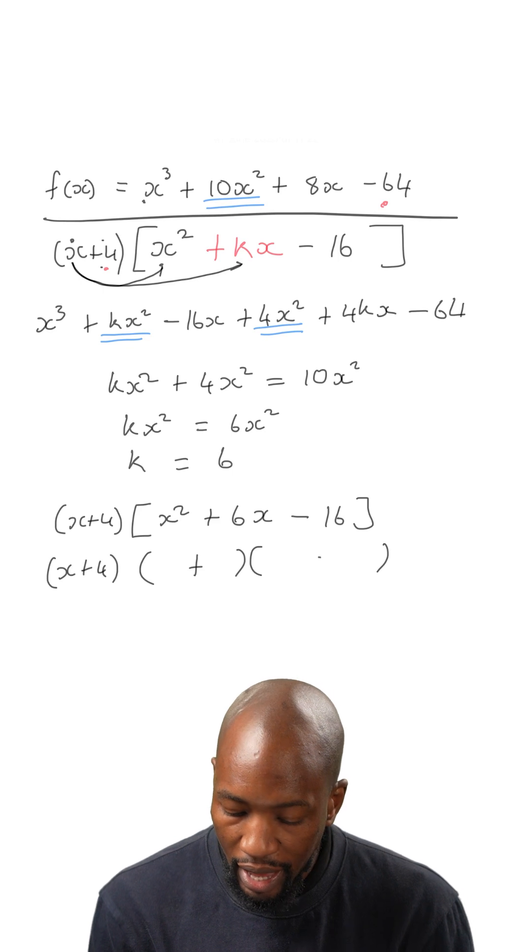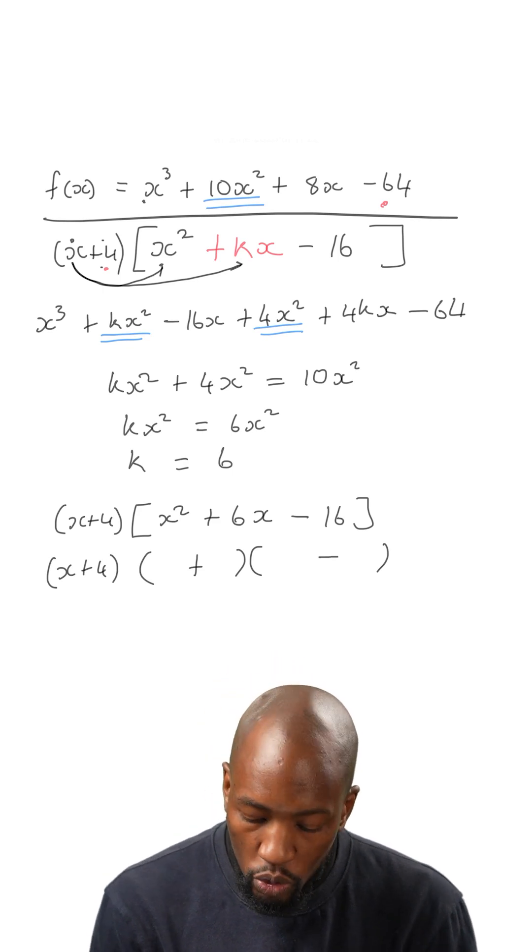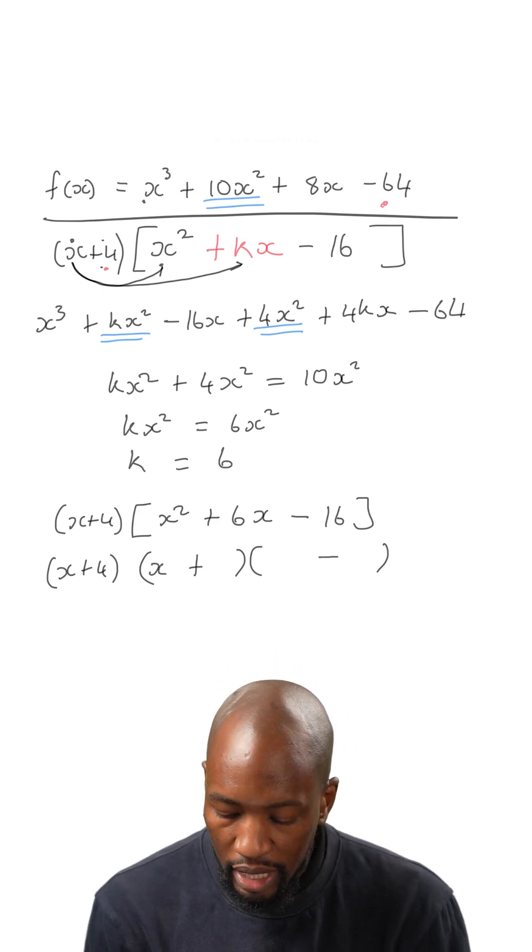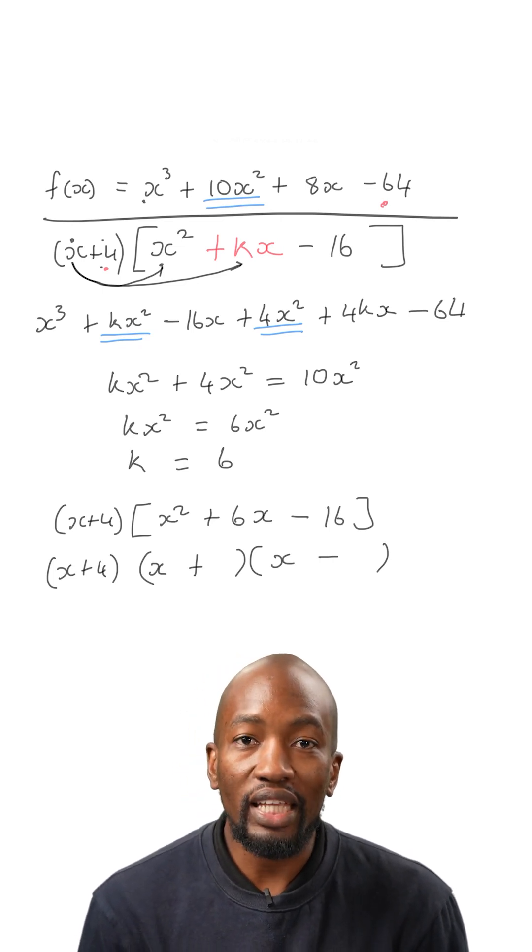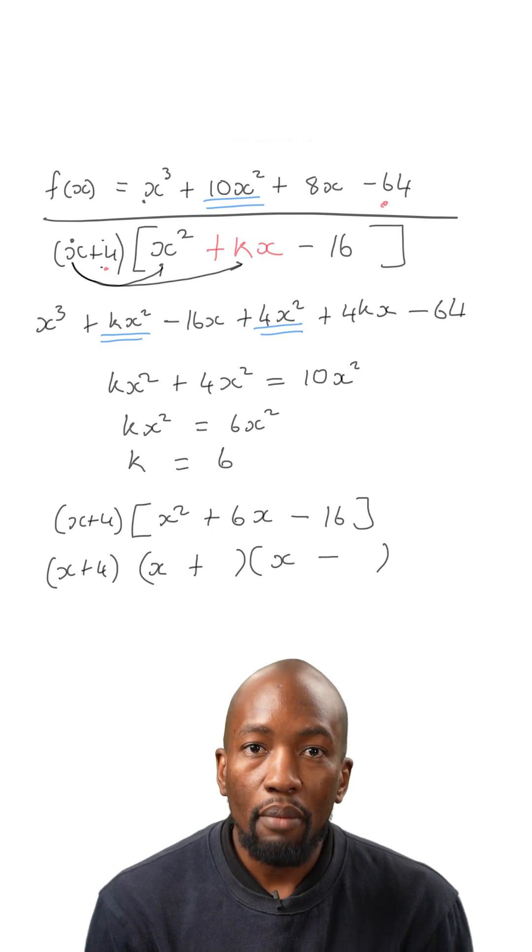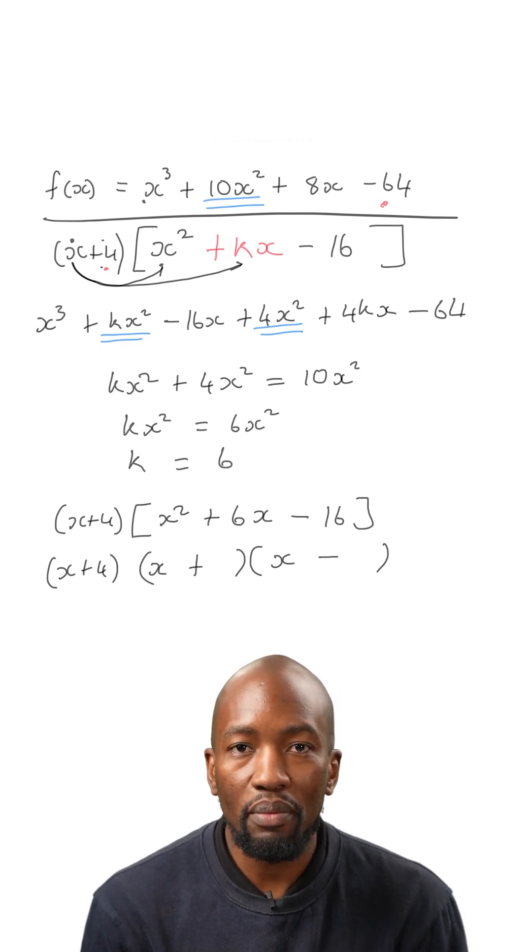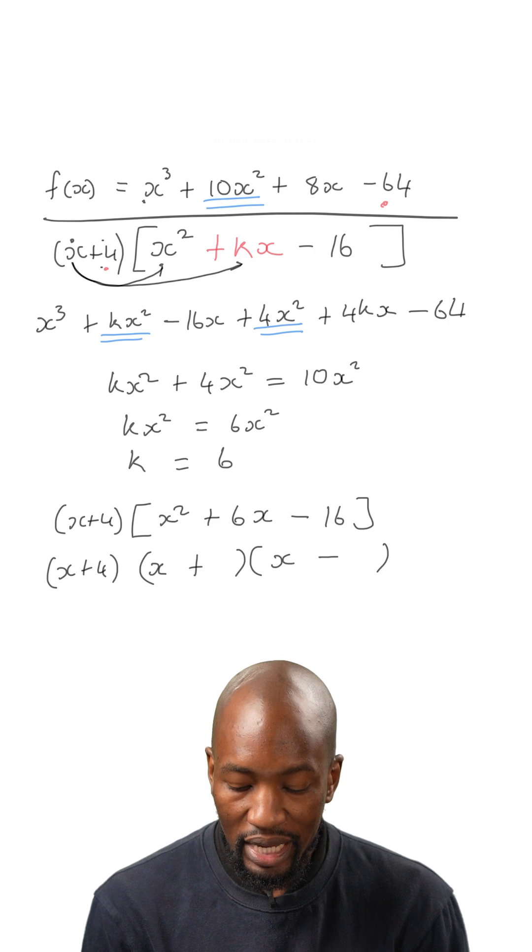Now x squared, we're going to have an x here and another x there. Now we're looking for two numbers that when we multiply them, they will give us negative 16. But when we add or subtract them, they need to give us 6.